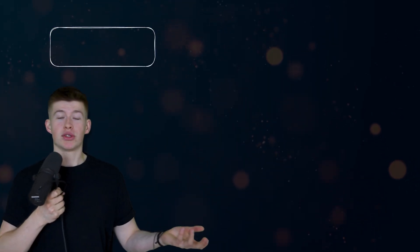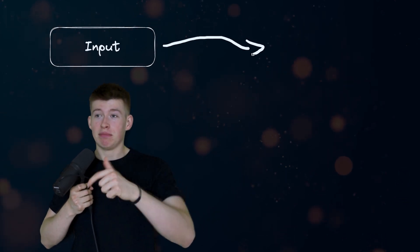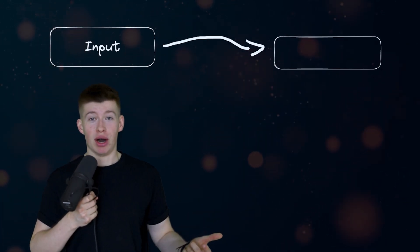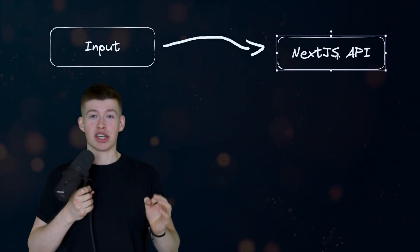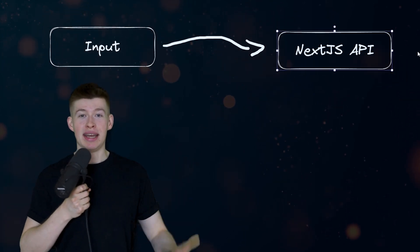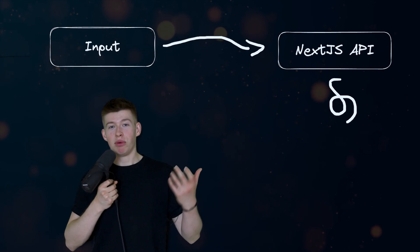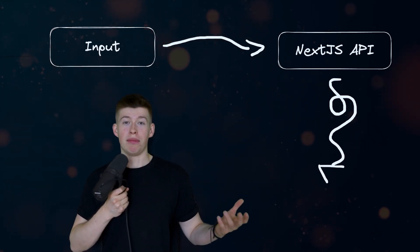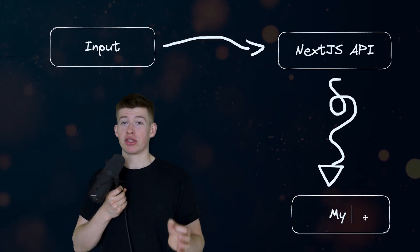Here's how this works. First, we want to receive inputs on a website, which is pretty straightforward. That input is then sent to an API route — in my case, that's going to be Next.js. The reason is I do not want to expose my actual connection, so I hide it behind a Next.js API route that we're sending the input to, and then once the input reaches that API endpoint, it is then sent to an Express server that I'm locally hosting on my PC.